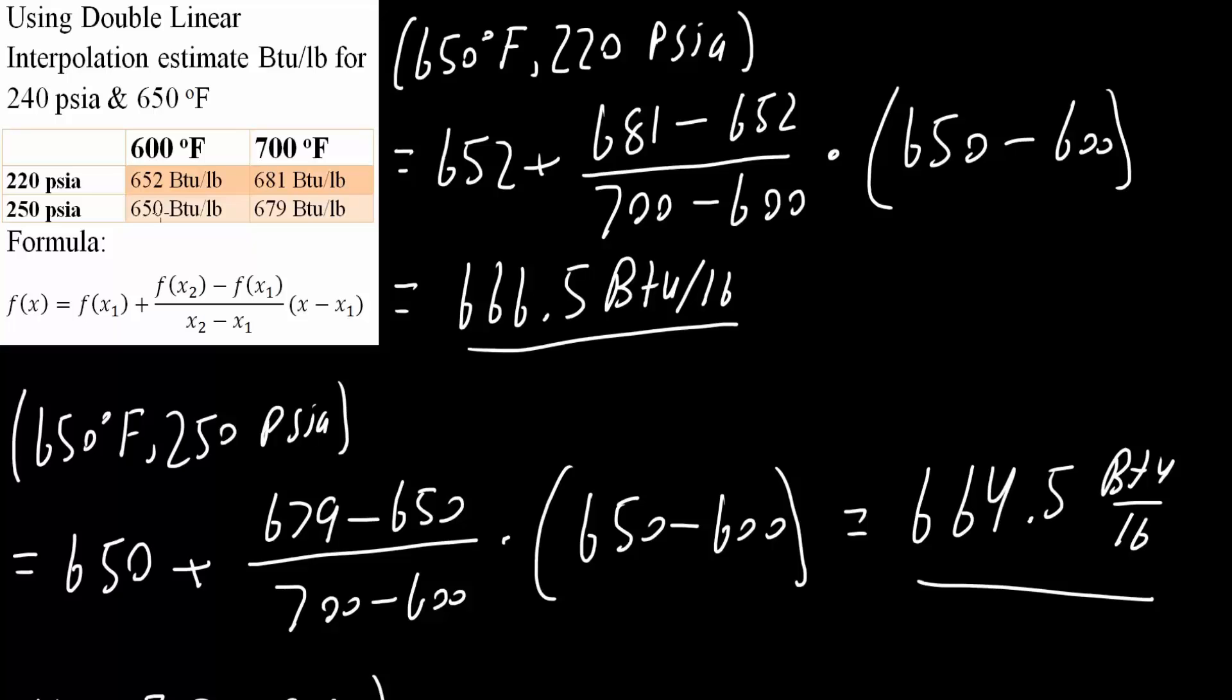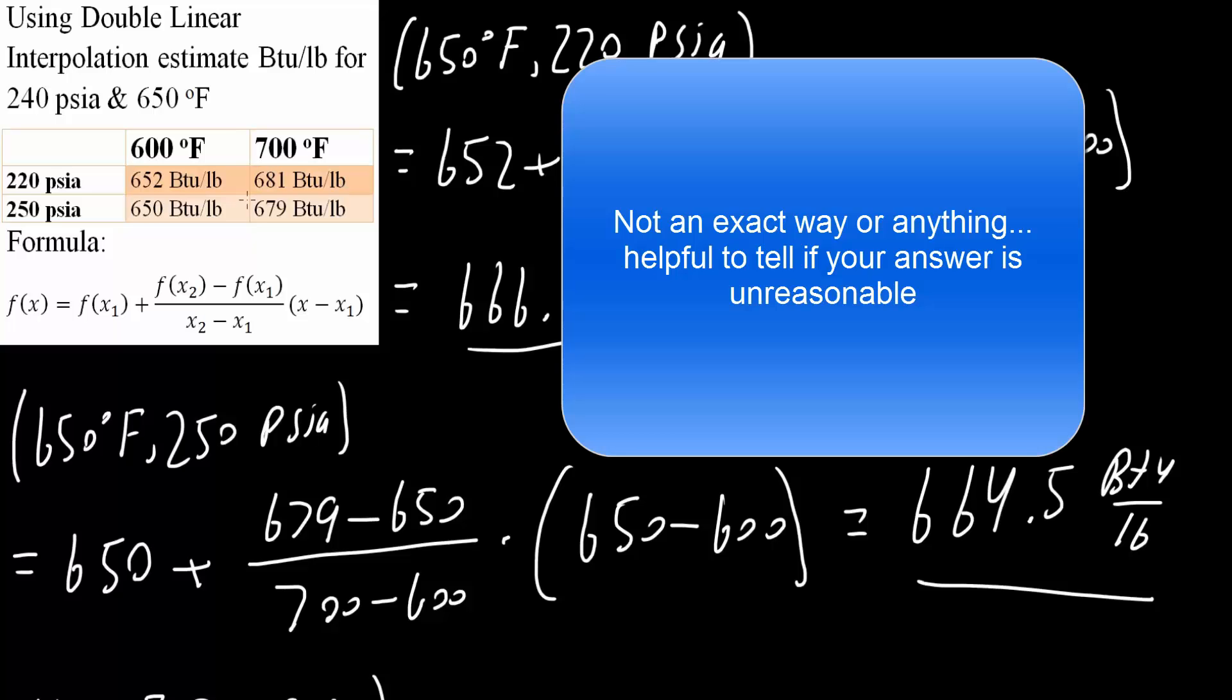And as PSI increases, the enthalpy decreases from 652 to 650. What we got was 650°F, somewhere in between, and 240 PSI, somewhere here. We got 665.2 BTUs per pound, so it's reasonable. That's all we need to do to use double interpolation.